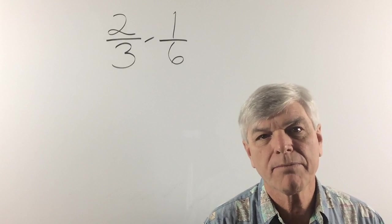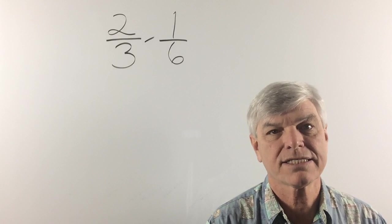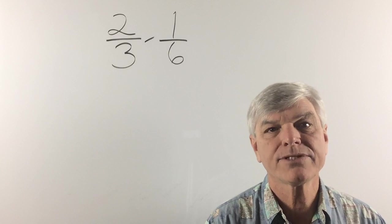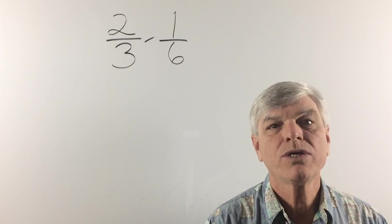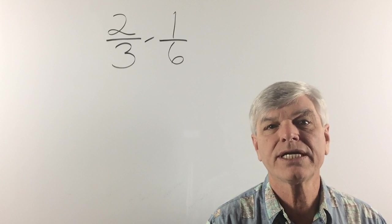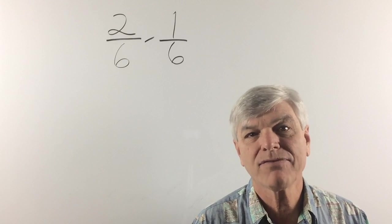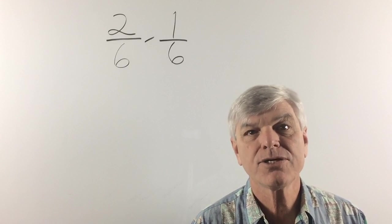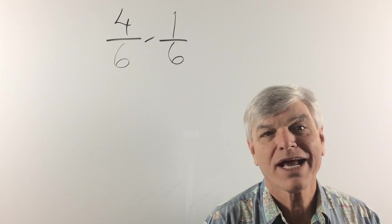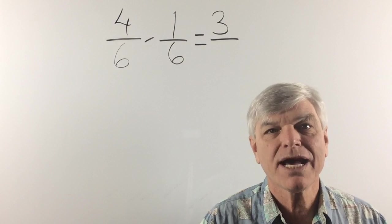Now let's try a subtraction problem that doesn't have a common denominator. How about 2 thirds minus 1 sixth. Now our common denominator is going to be 6. Which means we need to get 3 to be a 6. So let's multiply 3 times 2. And of course whatever we do to the bottom we have to do to the top. 2 times 2 is 4. And of course we only subtract the numerator. And we keep the denominator the same.